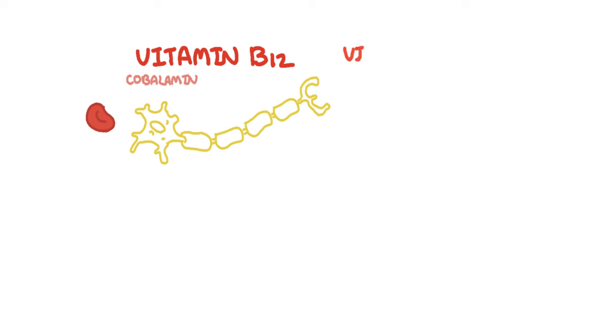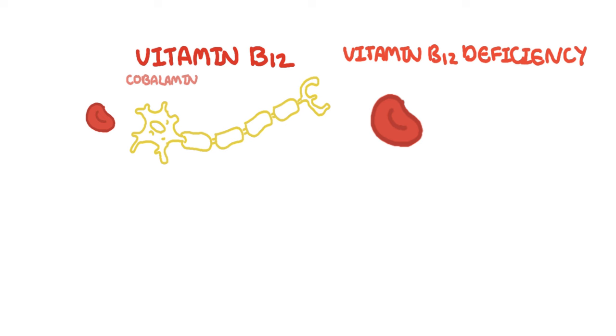Vitamin B12, also known as cobalamin, is an important vitamin to keep our red blood cells healthy as well as our neurons, the nerves of our body. Deficiency of vitamin B12 is associated with megaloblastic anemia, large red blood cells, as well as neurological and psychiatric symptoms.